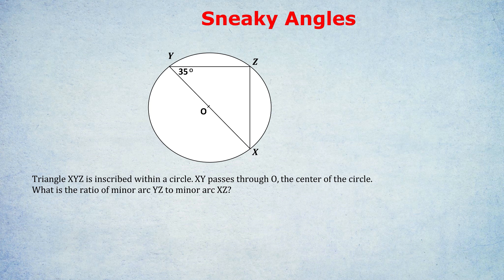Triangle XYZ is inscribed within a circle. XY passes through O, the center of the circle. What is the ratio of minor arc YZ to minor arc XZ? Feel free to pause and have a go yourself. First, notice that they didn't tell us that XY was the diameter, so surely we don't know that the angle at Z is 90.